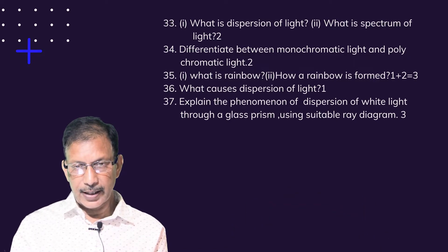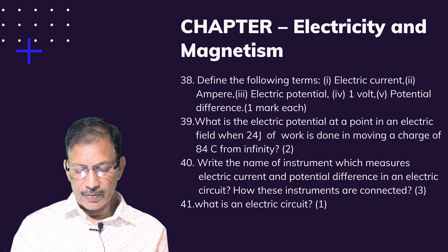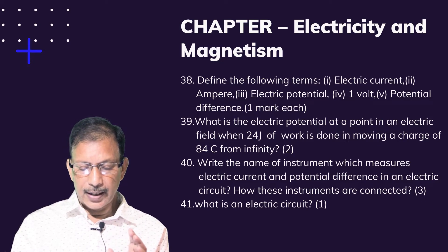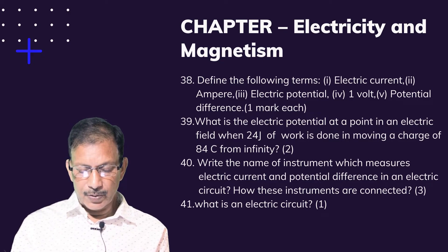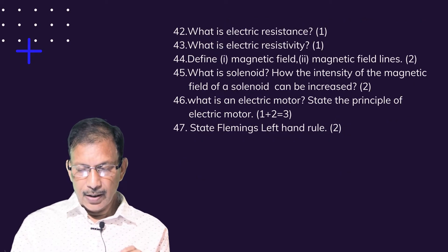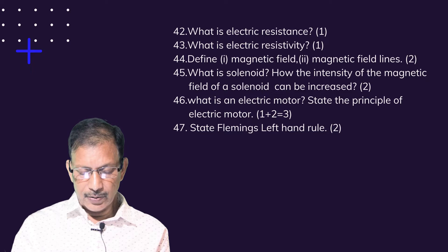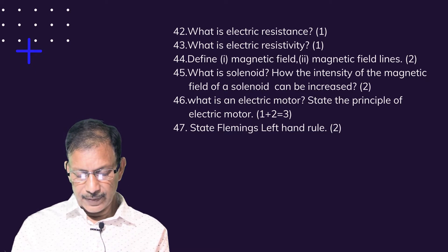Electricity and Magnetism: Define the following — electric current, one ampere, electric potential, one volt, potential difference, one ohm. What is the electric potential at a point in an electric field when 24 joules of work is done in moving a charge of 8 coulombs from infinity? Write the names of instruments used to measure electric current and potential difference in an electric circuit and how these instruments are connected. What is an electric circuit? What is electric resistance? What is electric resistivity? Define magnetic field and magnetic field lines. What is a solenoid and how can the intensity of the magnetic field of a solenoid be increased?